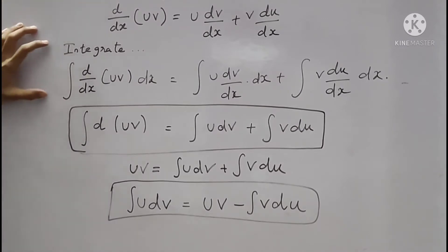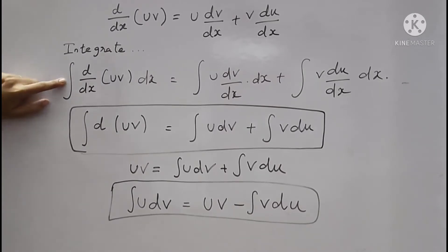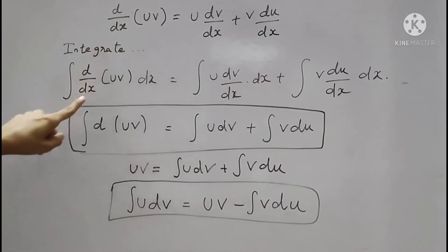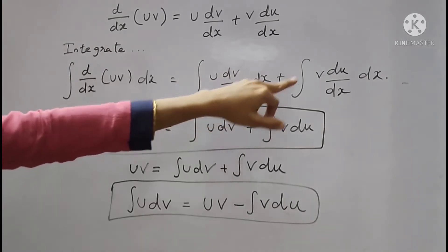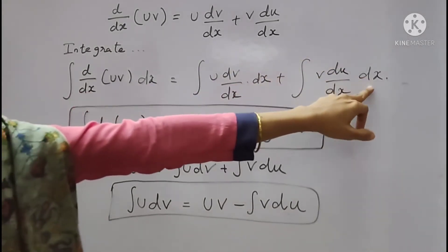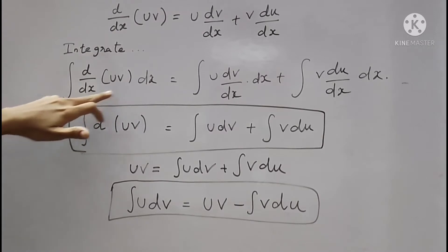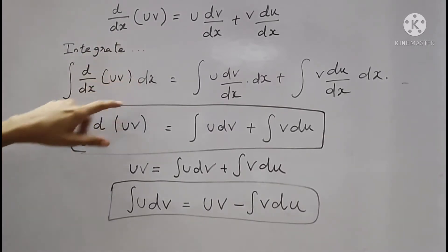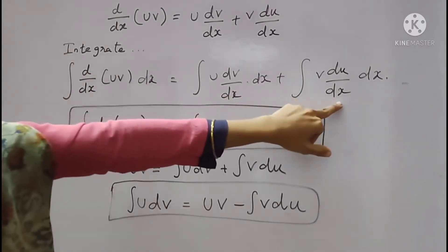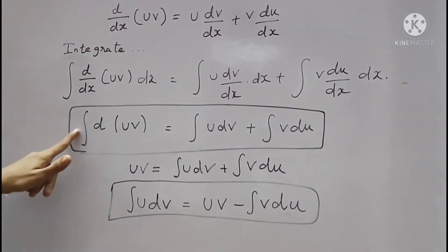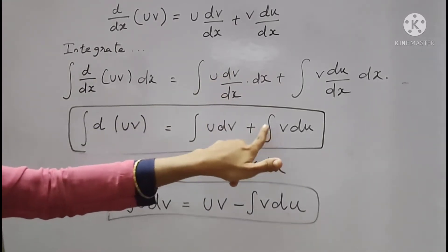This formula is standard. So we take the integral on both sides. On the left side we have the integral of d(uv)/dx into dx. On the right side we have integral of u·dv/dx into dx, plus integral of v·du/dx into dx. Now we have integrals on two sides. If we look at this side, dx and dx will cancel on both sides. So here we have: integral of d(uv) is equal to integral of u dv plus integral of v du.